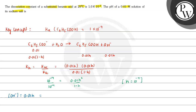Solving: H (degree of hydrolysis) comes out to 10⁻⁴. The concentration of OH⁻ is 0.01 × H = 0.01 × 10⁻⁴ = 10⁻⁶ molar. The concentration of H⁺ equals Kw divided by [OH⁻], which is 10⁻¹⁴ divided by 10⁻⁶, giving 10⁻⁸ molar. Therefore, pH equals negative log of [H⁺] = negative log of 10⁻⁸ = 8.